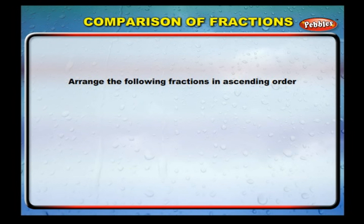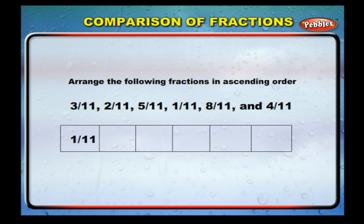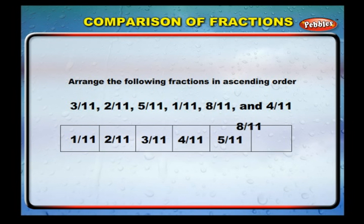Arrange the following fractions in ascending order. The given fractions are 3/11, 2/11, 5/11, 1/11, 8/11, and 4/11. As the denominators are all the same, let us compare the numerators alone. The smallest number is one, so 1/11 is the smallest fraction. Next comes 2/11, then 3/11, then 4/11, then 5/11, and finally 8/11.